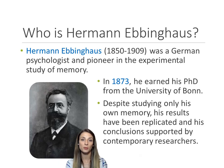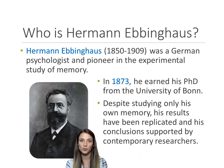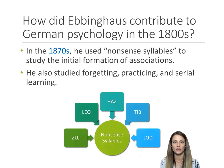Hermann Ebbinghaus was a German psychologist who was well known for his study of memory. He conducted most of his experimental studies using himself as the only participant, but he was able to identify several principles of memory that have stood the test of time and that we still know to be relatively true universally today.